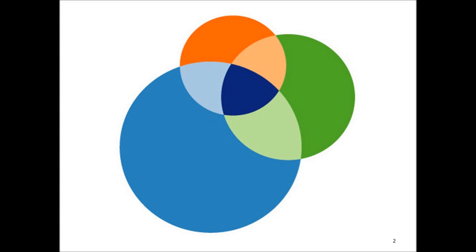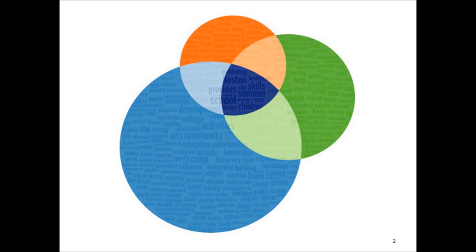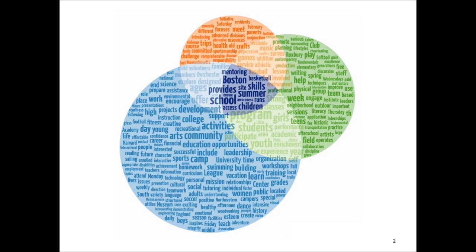Boston Navigator has a lot of data. In order to make sense of it all, I had to find ways to make it easier to explore the data. Here's an example. This word cloud represents word use frequency among all the program descriptions in Boston Navigator. The larger the word, the more times it appears in program descriptions. Rather than read through 250 pages of text, this image allows much faster interpretation of what kind of programs are in Boston Navigator.